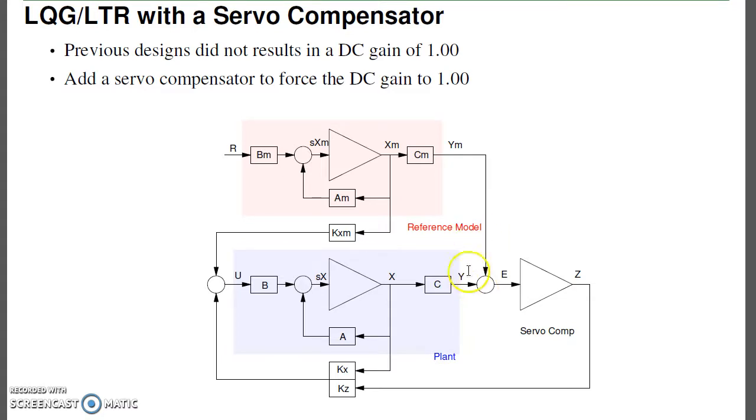So this will be the feedback control system. I've got my reference model, how I want the system to behave. I've got my plant, and I've got a servo compensator. This will integrate the difference between the plant and the reference model. There should be minus sign there.